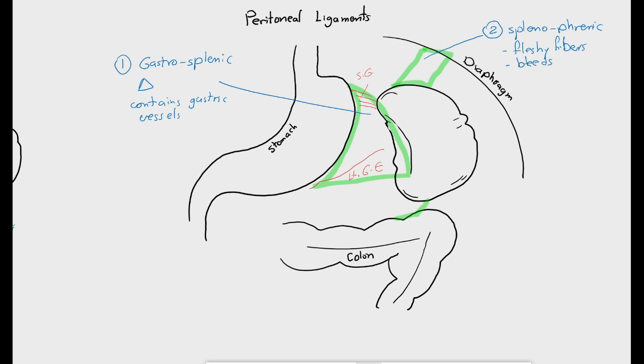Number three is the splenocolic ligament. Between the lower pole of the spleen and the splenic flexure of the colon. Unwise traction during colonoscopy, left hemicolectomy may lead to capsular tear of the lower pole of the spleen.